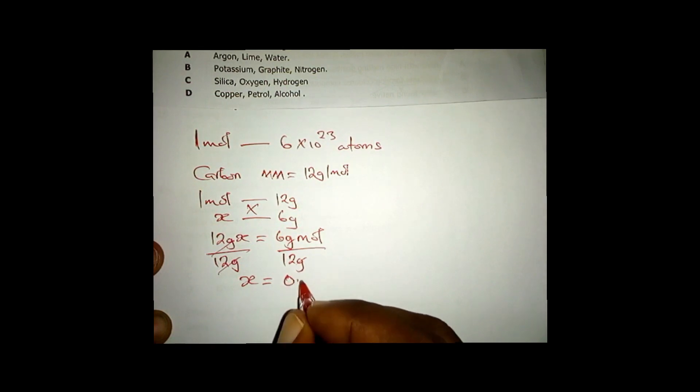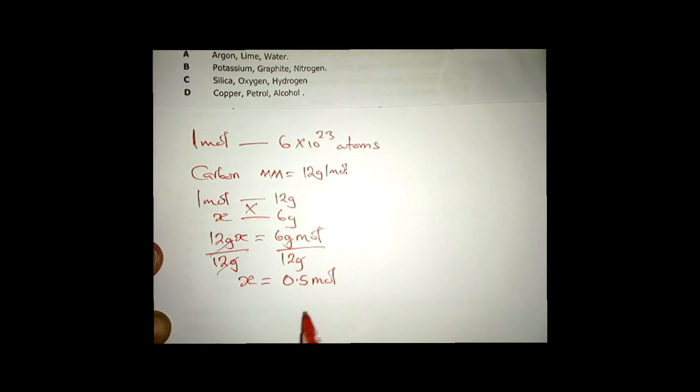You divide both sides by 12 grams, the grams cancel, and you remain with x equal to 0.5 moles.